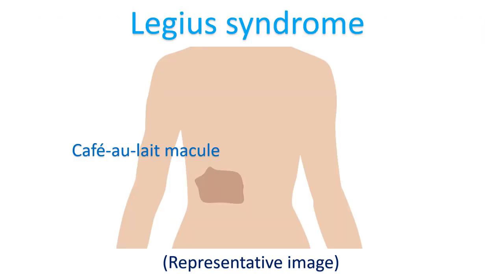Legius syndrome resembles neurofibromatosis type 1 in that café-au-lait macules can be seen, but it lacks the risk of cancer. It is caused by heterozygous mutations in the SPRED1 gene. Mitral valve prolapse and paroxysmal atrial tachycardia have been reported rarely in Legius syndrome.